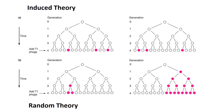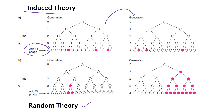To summarize the interpretation: if the induced theory is correct, mutation will occur only in the fourth generation where the mutagen — the T1 phage — is added, and the rate of mutation will remain the same in both sets. If the random mutation theory is correct, mutation can occur in any of the four generations and the rate of mutation will differ from one set to the other.